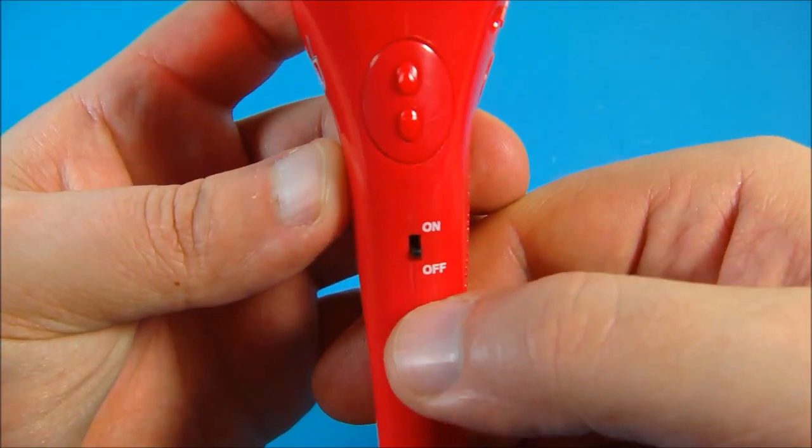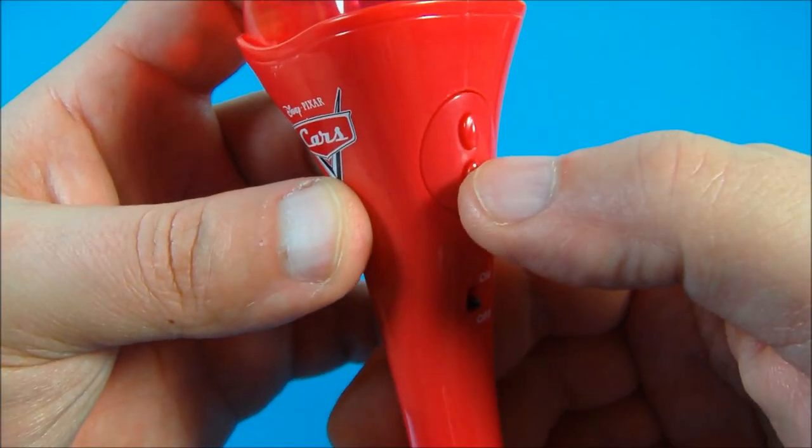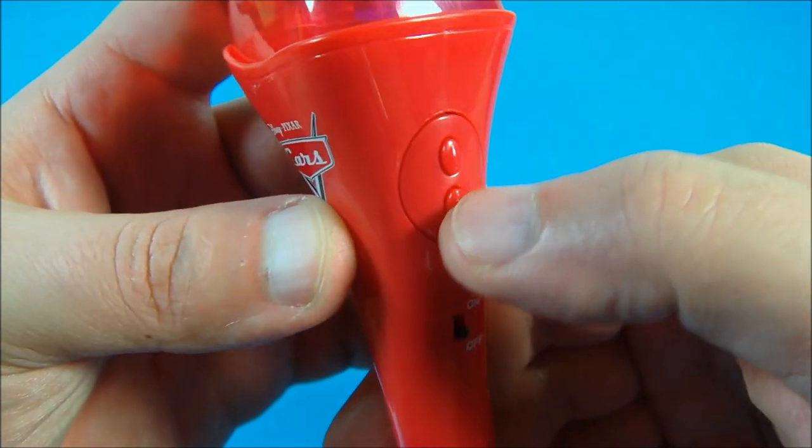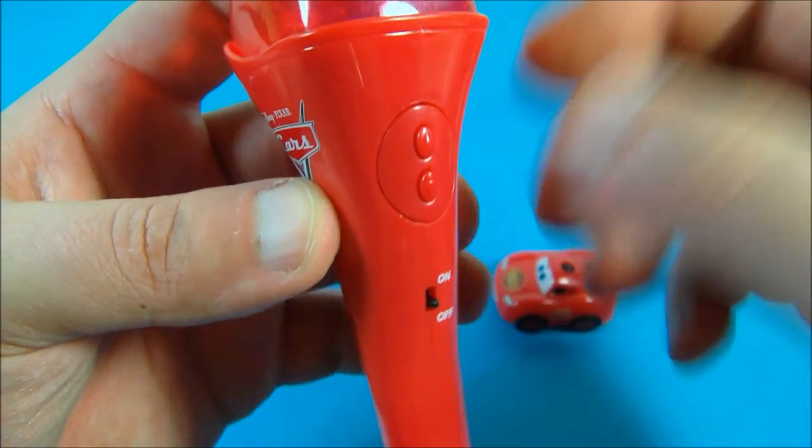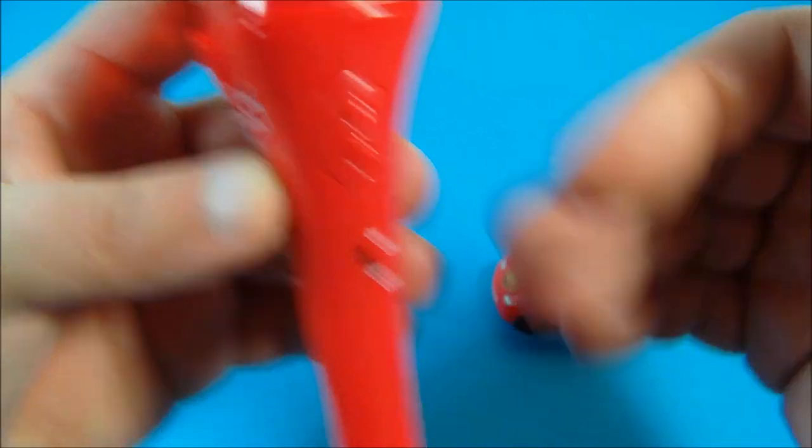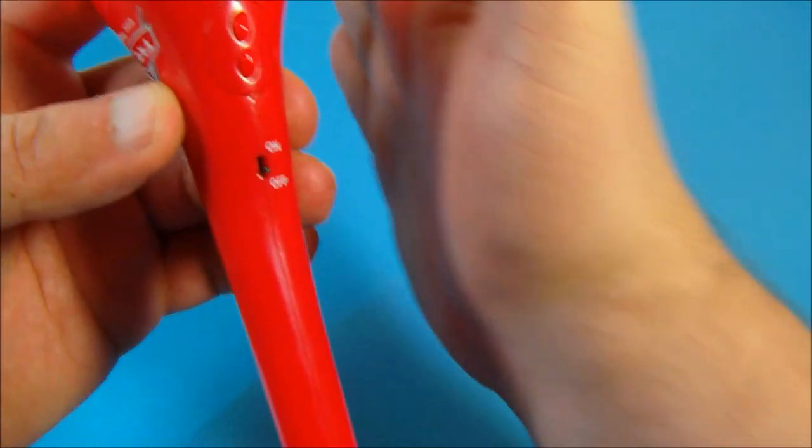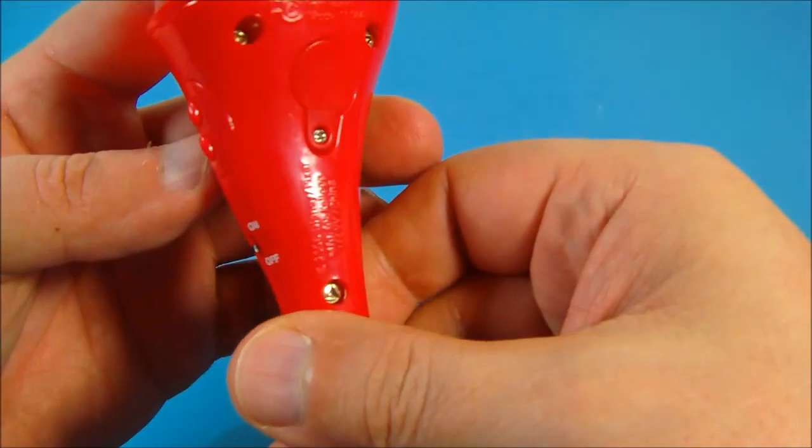And then on the front here, there's an on-off switch. And then these two little buttons here is what controls Lightning McQueen. You've got the top button, which makes him go forward. And then the bottom button makes him go backwards. So there's a back and forth motion. So every time you back him up, he goes in a different direction. That's how you control him.